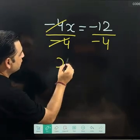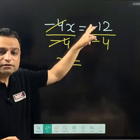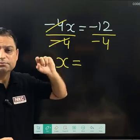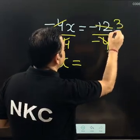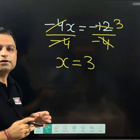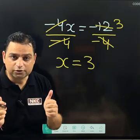So in the left side I am having x. In the right side this minus and minus is plus. Do remember minus and minus, it is plus, and 4 threes are 12. So x will be equal to 3.